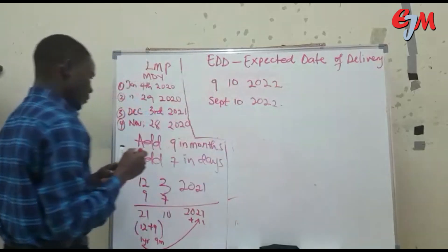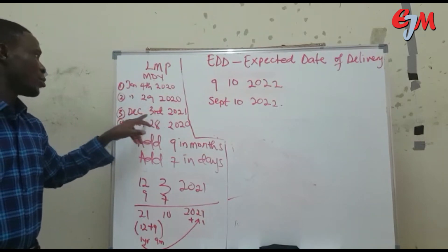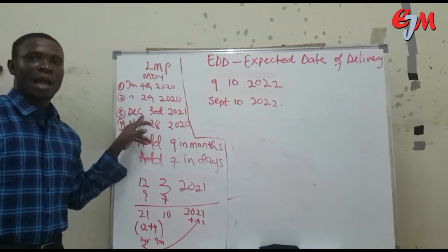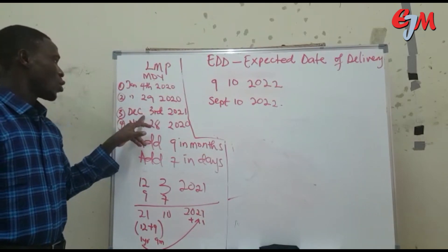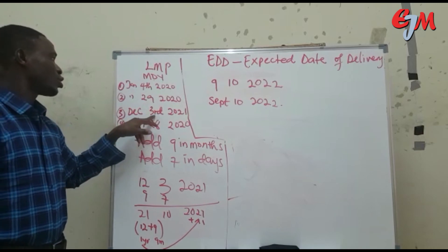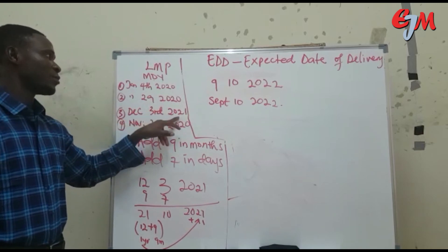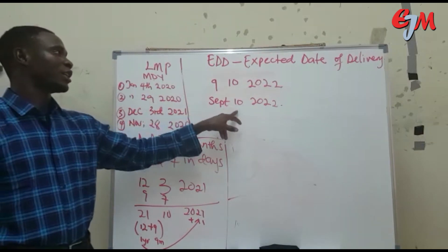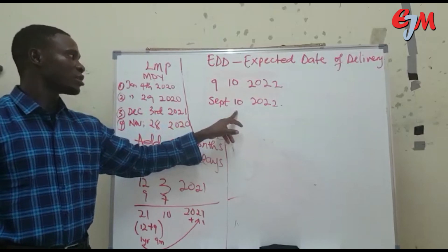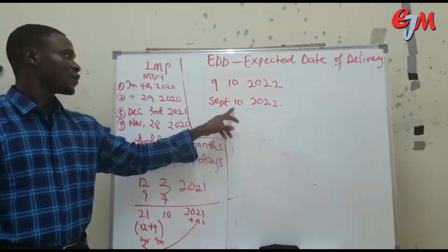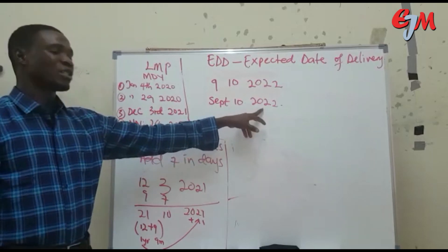So if you are pregnant in the month of December, and your last menstrual period was towards December 2021, you are expected to give birth on the 10th of September the following year, 2022.